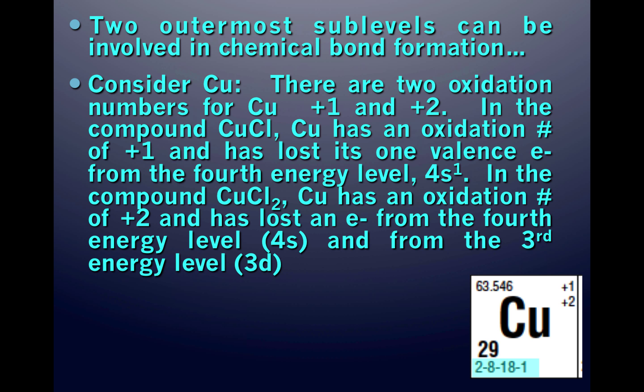Copper has one valence electron. In the upper right-hand corner you see that copper has two oxidation numbers: +1 and +2. In the compound CuCl, copper has an oxidation number of +1, meaning it has lost its one valence electron from the fourth energy level — the 4s sublevel.